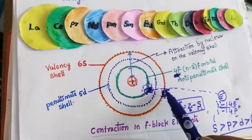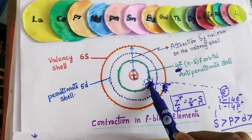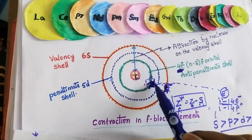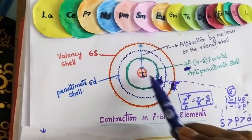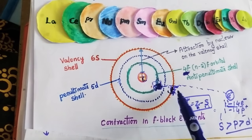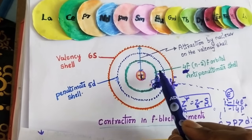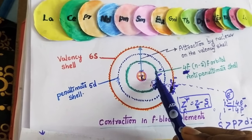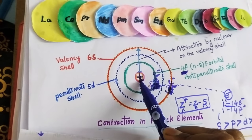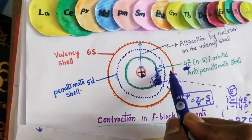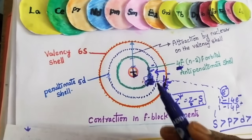The electrons increasing from lanthanum to lutetium are the f electrons, from 1 to 14. The f electrons have a diffused shape, meaning they cannot protect the outermost electron from nuclear attraction — they have poor shielding capacity. Due to poor shielding, nuclear attraction toward the outermost electron becomes greater, so as electrons enter the anti-penultimate shell and protons increase, the size gradually decreases, showing contraction.